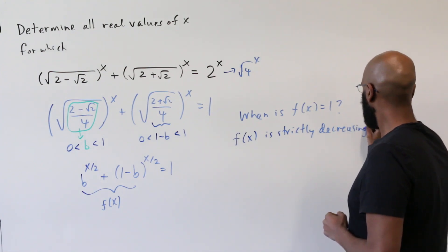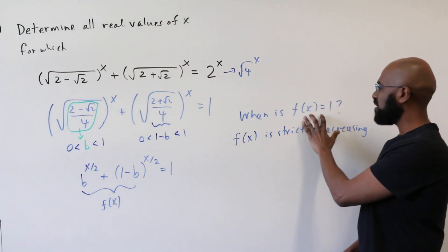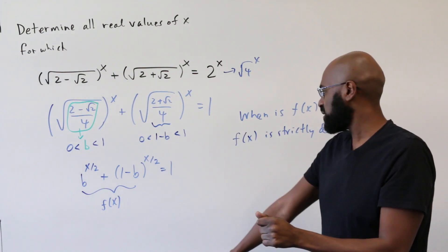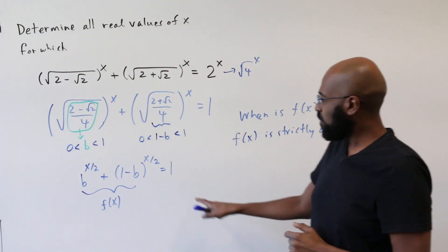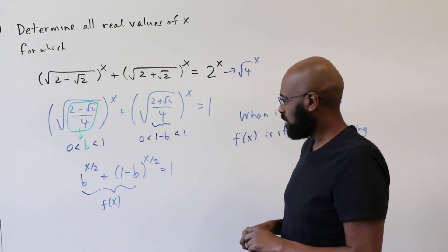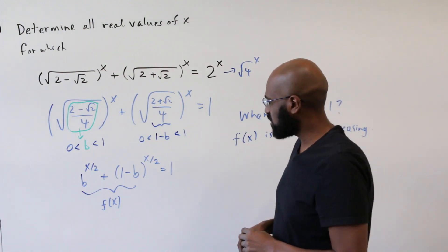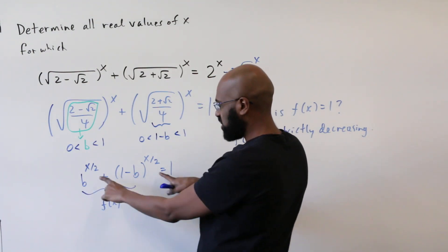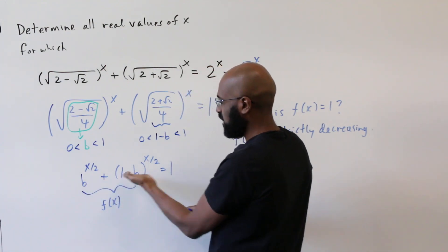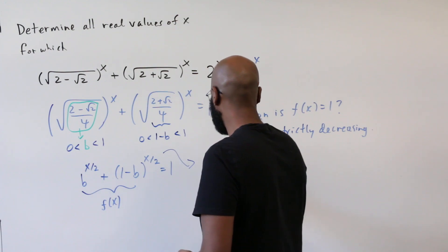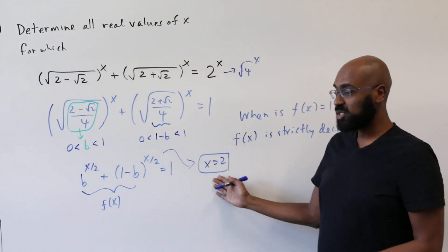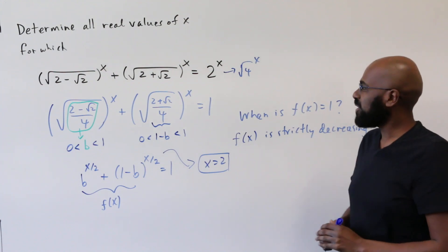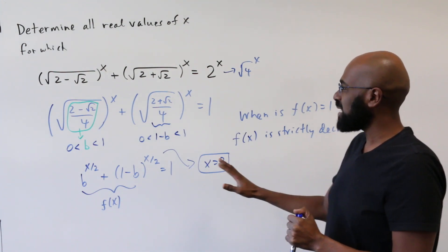What that means is: if we're asking for values of x for which f of x equals 1, there can only be at most one such value, because after that the function decreases. So we know there's only at most one solution. Can we hunt for what that solution is? Well, one observation is that b plus (1 minus b) itself is 1, so if we make the exponents 1 we get equality. We can do that by setting x equal to 2. So x equals 2 is a solution, and it's the only possible solution because f of x is a decreasing function.